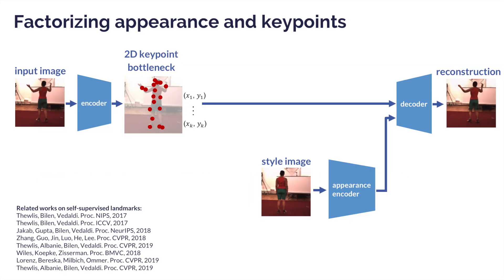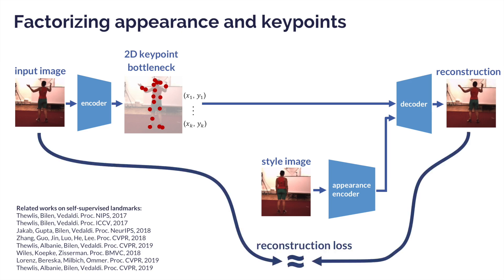Our approach is based on factorization of appearance and 2D keypoints. This is achieved by training a conditional autoencoder with a tight 2D keypoint bottleneck that encodes the pose information, while the appearance is supplied by looking at another frame of the same video. It exploits the fact that the geometry changes but appearance does not in videos of the same object instance. The model is trained using reconstruction loss.